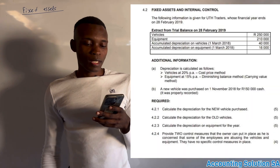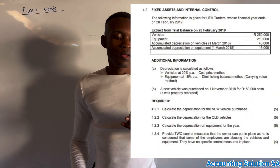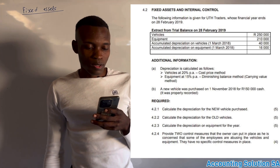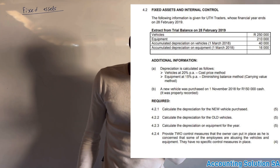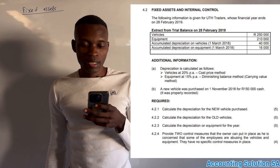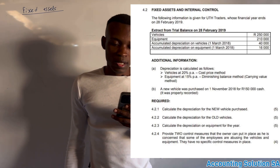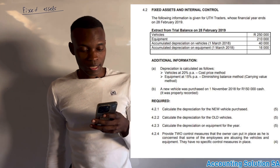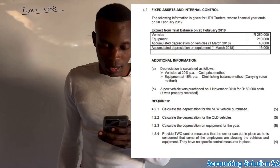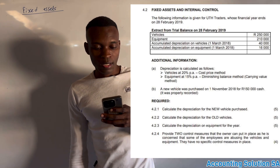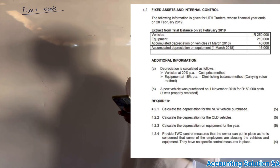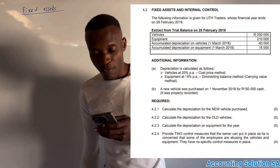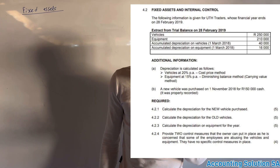Let's look at the question paper for today's lesson. It says 'Fixed Asset and Internal Control.' The following information is given for TH Traders, whose financial year end is on 28 February 2019. The extract from the trial balance gives us vehicle cost price, equipment, and accumulated depreciation for both vehicle and equipment.